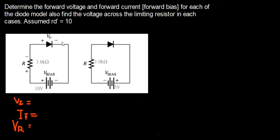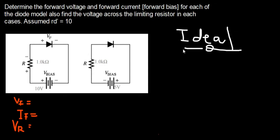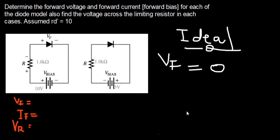First, we assume this diode is an ideal diode. An ideal diode doesn't have any biopotential, meaning it doesn't need any voltage to make it work. Therefore, the voltage drop in the diode is zero. Looking at this circuit, the diode is in series with the resistor. So the current flowing through the diode will be the same current flowing through the resistor: IF equals IR.